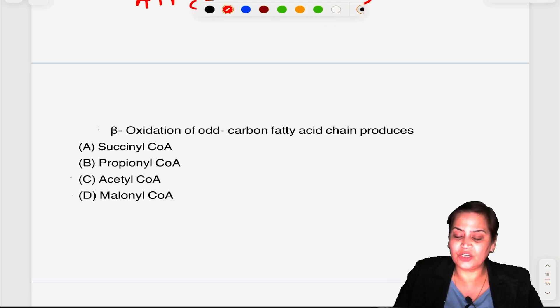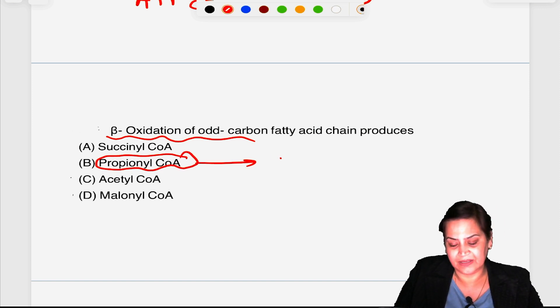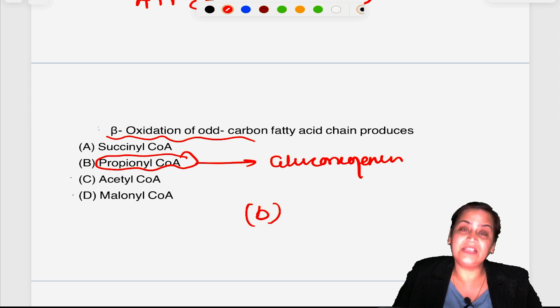Beta oxidation of odd chain fatty acids. Always remember odd chain fatty acids always produce propanoyl coenzyme A which undergoes gluconeogenesis. Very important question again. This question is also an MCI question. This has been asked in your FMGE exam twice.